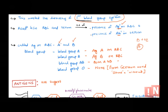Individuals containing antigen A on their RBC were classified as blood group A. Those with antigen B on their RBC were classified as blood group B. Individuals with both A and B were classified as blood group AB. Blood group O was discovered later - these individuals have neither A nor B on their RBC. The 'O' comes from the German word 'Ohne,' meaning 'without,' so individuals without A and B antigen were classified as blood group O.